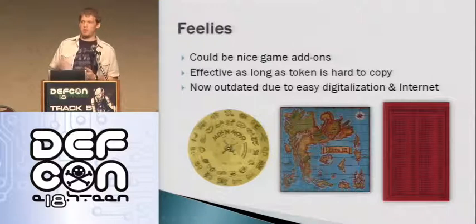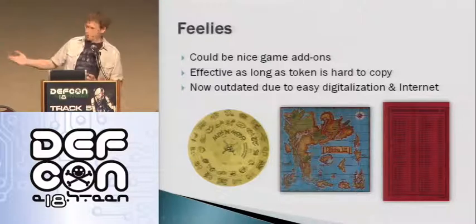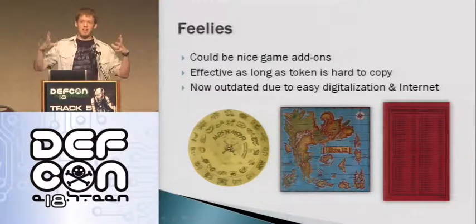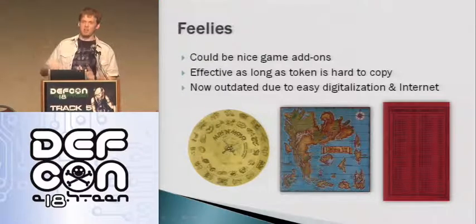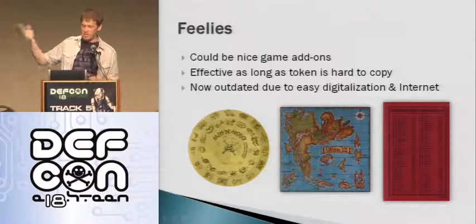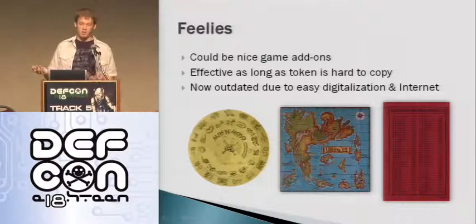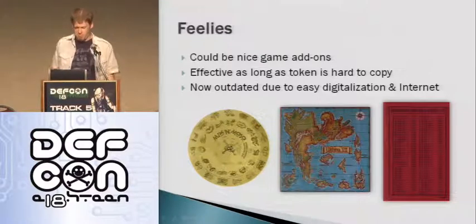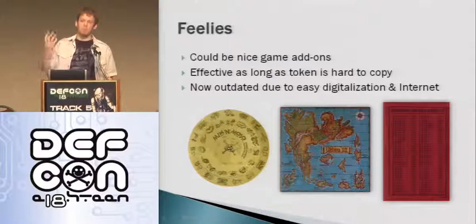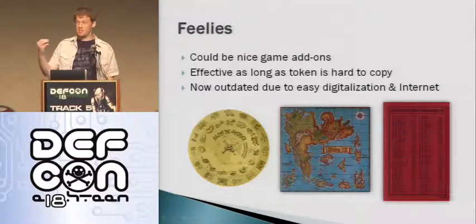As a side note on feelies in more detail, because a couple of the younger folks might not have seen this — especially in the middle we have Ultima 7, which had this beautiful cloth map. It was really nice, and it still hangs on my wall. But it also doubled as a lookup table. This is only effective as long as the token is hard to copy. For example, on the right side you've got SimCity in red because black-and-white copy machines couldn't copy it. These days you take a picture with your cell phone and put it on the internet. But it's kind of nice to see that there was a part of DRM or copy protection that actually added value to the user — and this is the last time we'll actually see this.